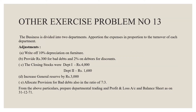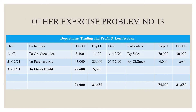In this problem, we will prepare a trading account for two different departments and consolidate a balance sheet. Department 1 and Department 2 are different departments. On the debit side of the trading account, opening stock is $3,400 and $1,100 for the respective departments.